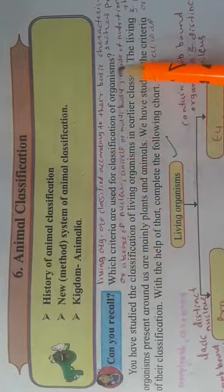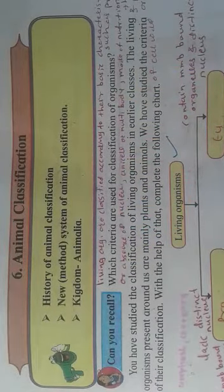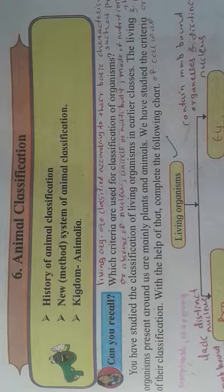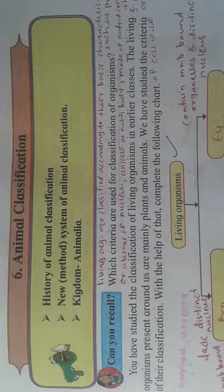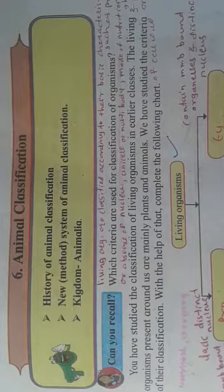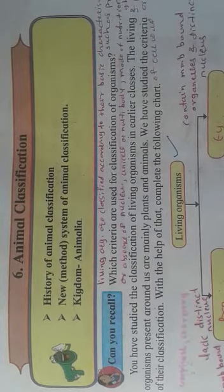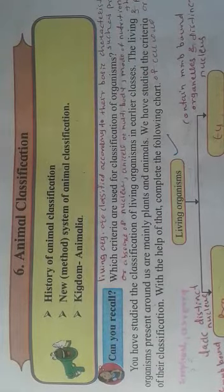Now the first question in your textbook: which criteria are used for the classification of organisms? Without any criteria we cannot do any classification. For example, if you are going to divide the students of a class into two groups, what are your choices? You can use criteria such as separating girls from boys, or students in proper uniform versus those without uniform, or based on percentage. Similarly, we need criteria for the classification of animals and plants.